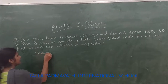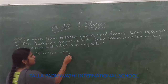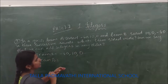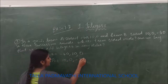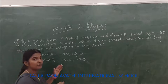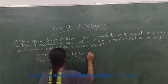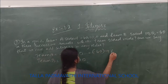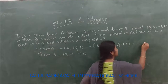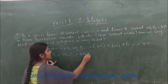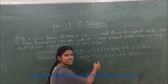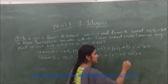Team A scored minus 14, 10, and 0. Team B scored 10, 0, and minus 14. To find which team scored more, we do the addition. For team A: minus 14 plus 10 is minus 4, and minus 4 plus 0 is minus 4 — wait, minus 14 plus 10 plus 0 is minus 4... actually, minus 40 plus 10 is minus 30, and minus 30 plus 0 is minus 30. For team B: 10 plus 0 is 10, and 10 plus minus 40 is minus 30.